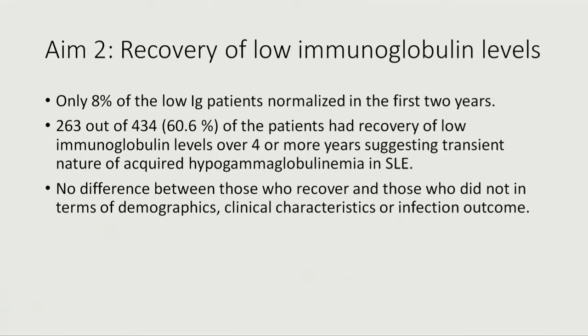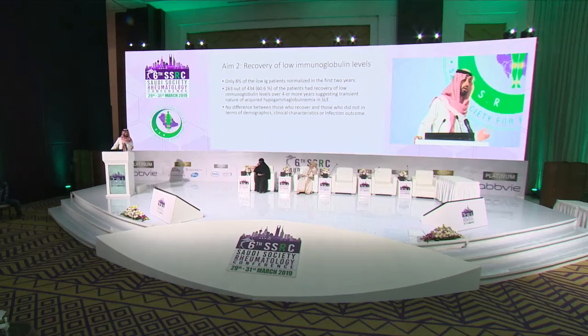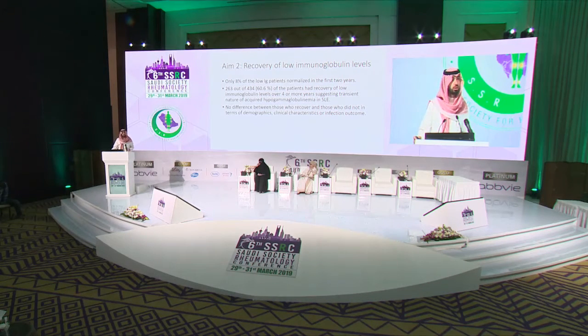Regarding the second part — when we have low immunoglobulin, are they transient or persistent? This is the largest and first study to look into this in detail. About 60% of patients with lupus, when you find their immunoglobulin low, will recover over four or more years. The rest, about 40%, usually persist. And when we asked whether they are different, the answer is no — both groups are similar in terms of important outcomes.